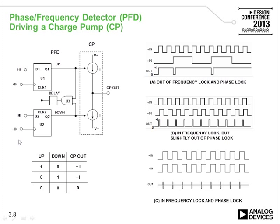Let's have a closer look at the phase frequency detector which drives the charge pump. In Analog Devices PLLs, PFDs are generally CMOS in nature and made up of a dual D-type flip-flop. We have a typical PFD or phase frequency detector driving the charge pump. There is a positive input and a negative input, and the D-type flip-flops are clocked on the positive edge of these inputs. The D-inputs in each one are held high.